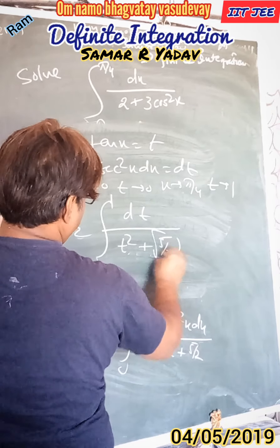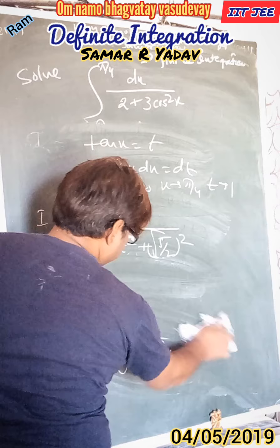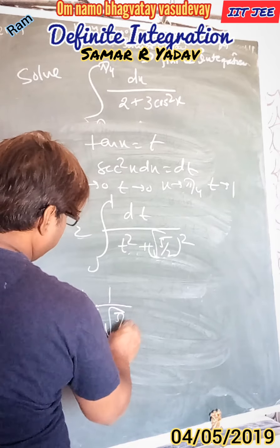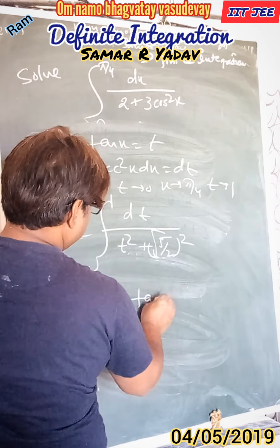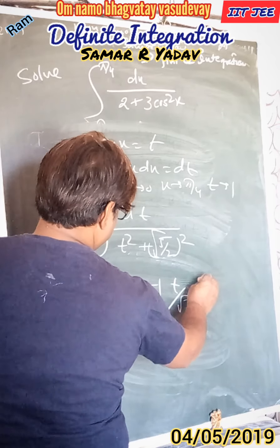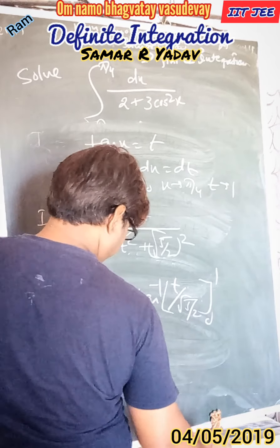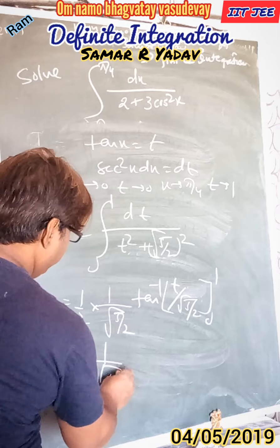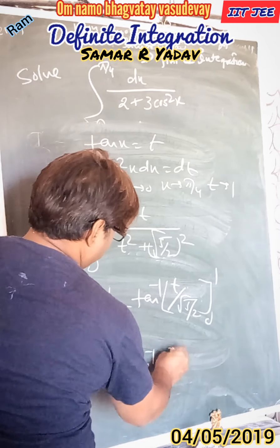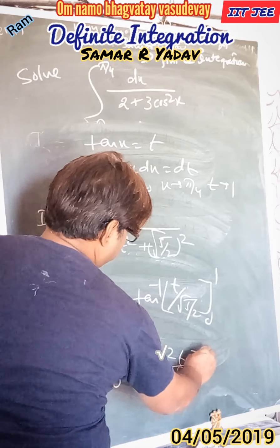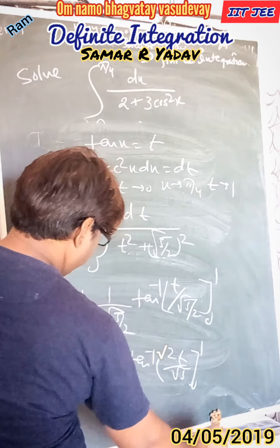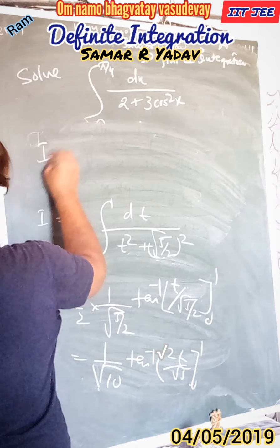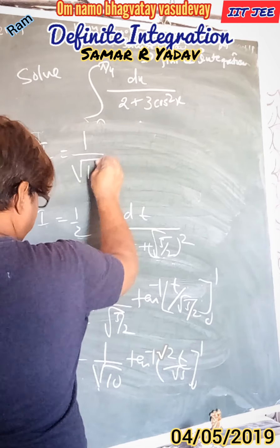Now applying the standard arctangent integration rule, we get: 1 by 2 into 1 upon root (5 by 2) into tan inverse of t upon root (5 by 2), with the limit from 0 to 1. Simplifying, this becomes 1 upon root 10 into tan inverse.